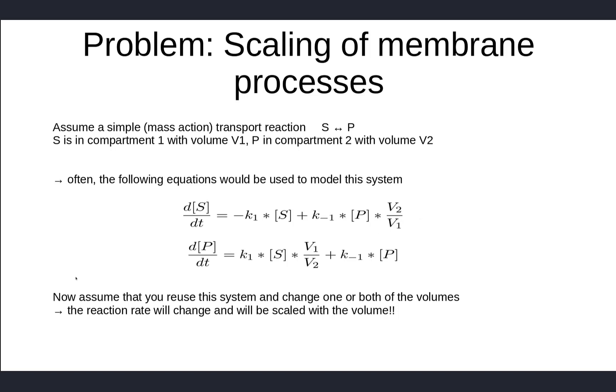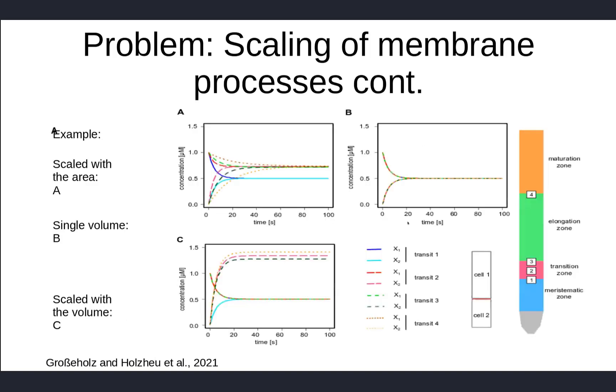Now let's assume you reuse the system and change one or both volumes. In that case, the reaction rate will be scaled with these volumes, and that's intrinsically not correct. A transport process will usually, if at all, scale with the area over which this process takes place—for example, the cell surface. How can you prevent doing something intrinsically wrong by forming the product of your reaction kinetics with the volume ratio? Is that a problem at all?